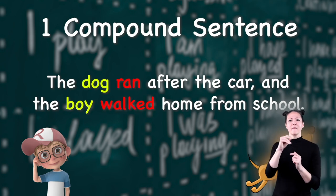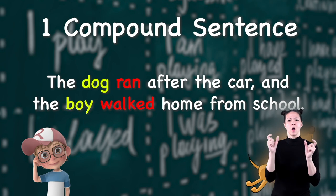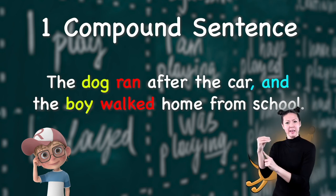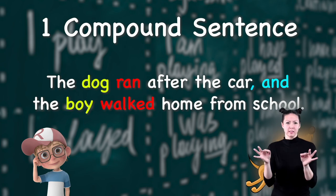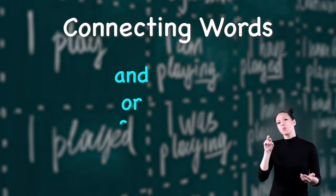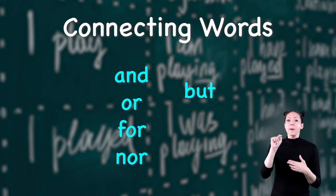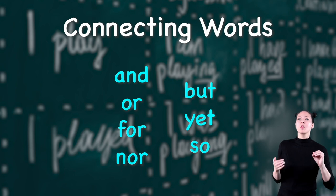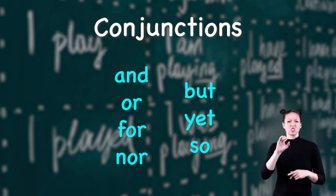Notice how there are two subjects and two predicates or verbs. The two independent clauses are joined together using the word 'and.' Some other words that can be used to join simple sentences to make compound sentences are: or, for, nor, but, yet, and so. Those short connective words are known as conjunctions.